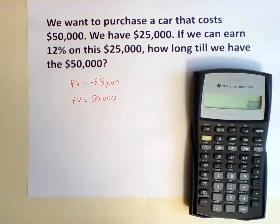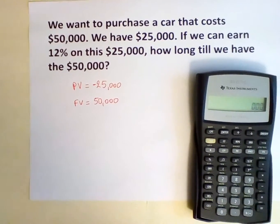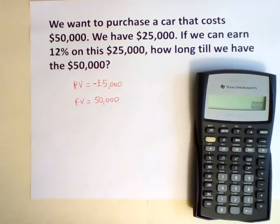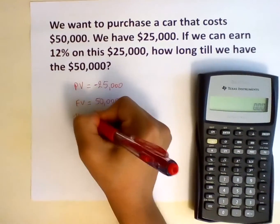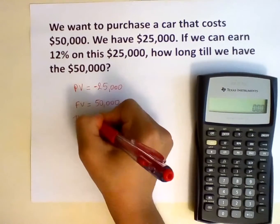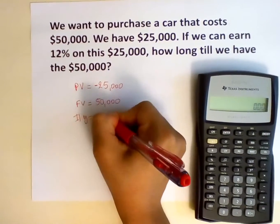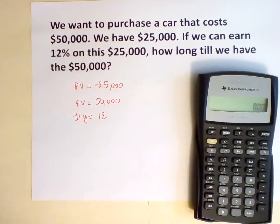The investment that we are considering gives us a 12% return, so I over Y equals 12.